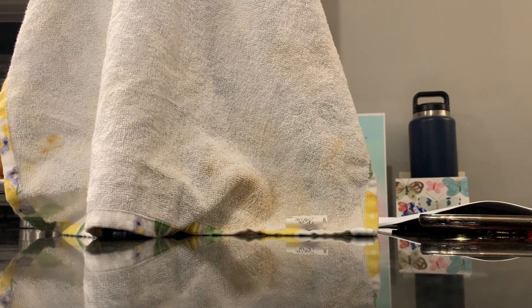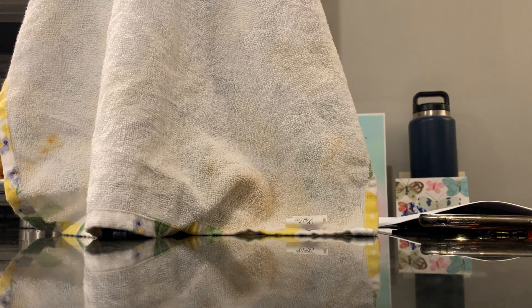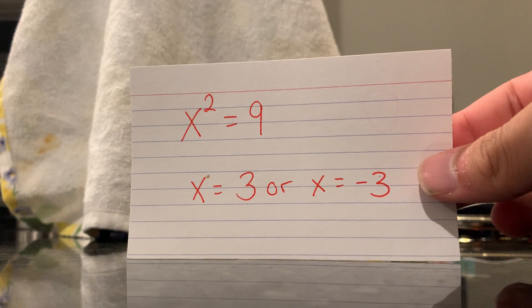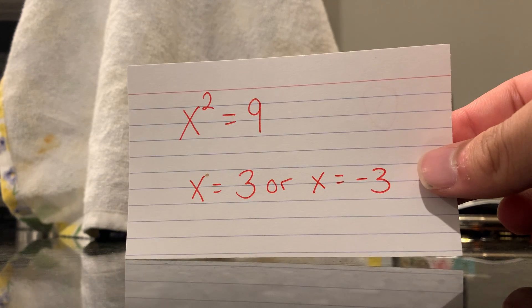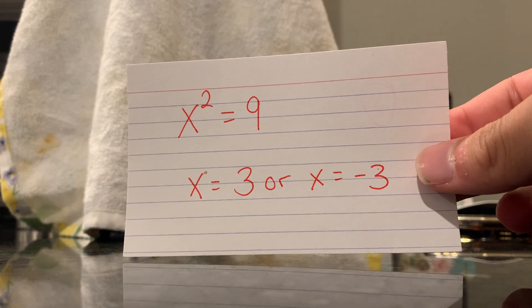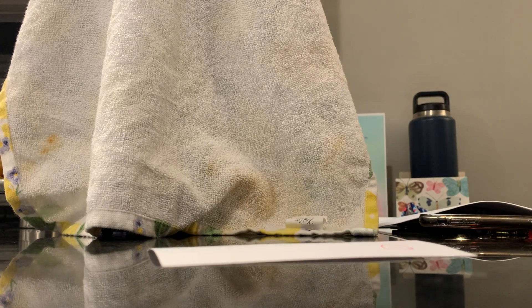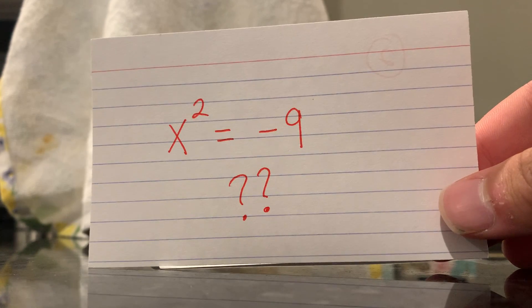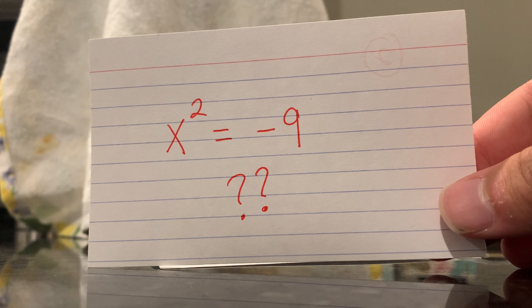Remember back to algebra one when the teacher put x squared equals nine on the board and the whole class knew that x could equal either three or negative three? And then the smart kid asked, Mr. Whoever, what about x squared equals negative nine? And you felt like your head was going to explode. The square root of a number less than zero?